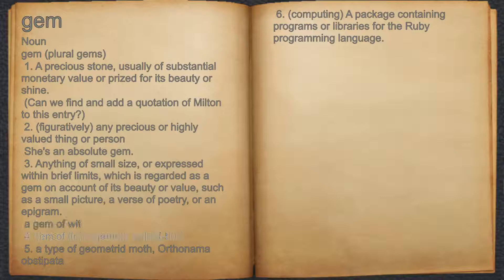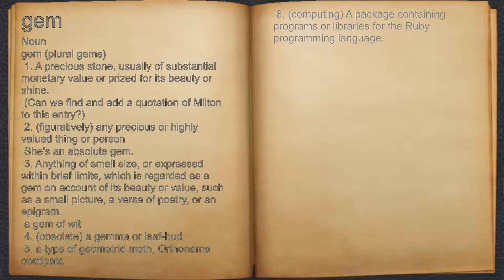4. Obsolete, a gamma or leaf bud. 5. A type of geometrid moth, or thonoma of sapata. 6. Computing, a package containing programs or libraries for the Ruby programming language.